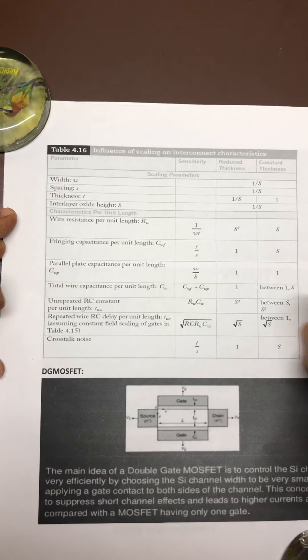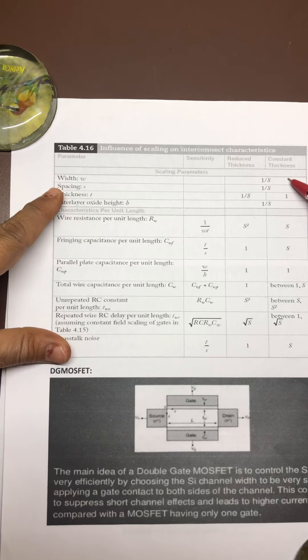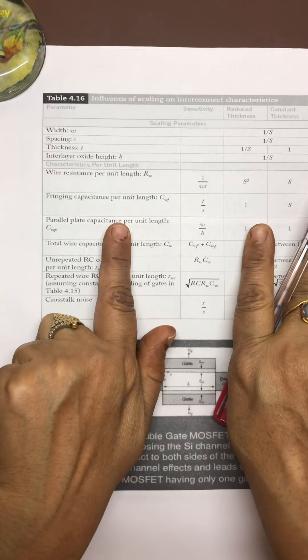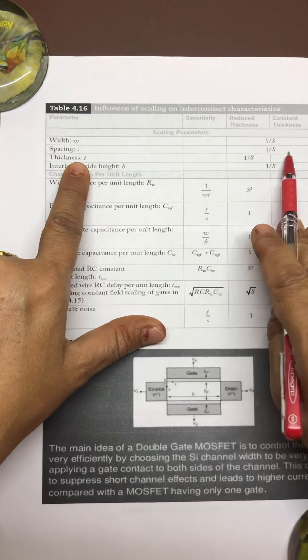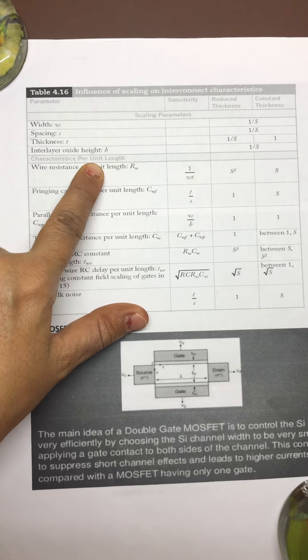In this, our scaling parameters are: width W, that is 1 by S scaling factor, spacing between two interconnects S with reference to 1 upon S, and interlayer oxide height that is going to be 1 upon S.